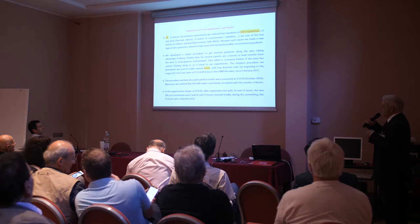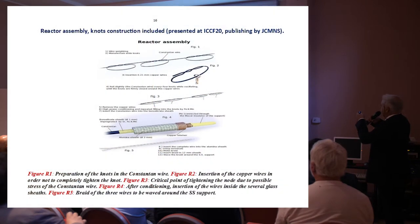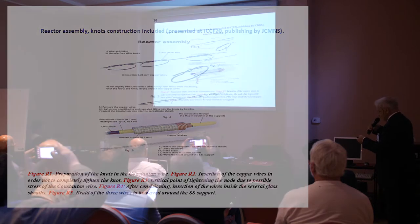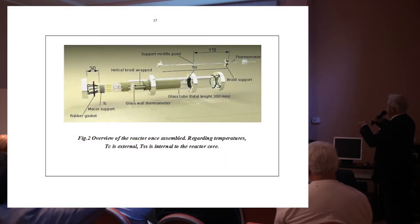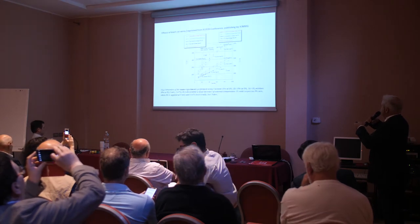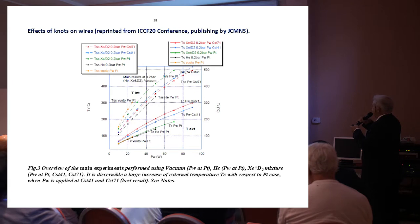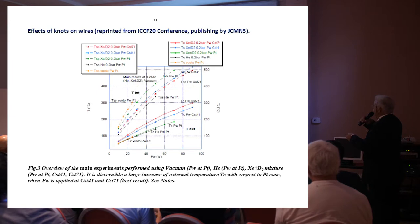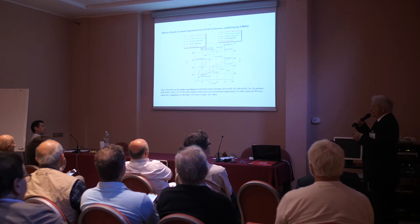We realized the excess power depends on the number of nodes. Increasing the node count — for example from 41 to 71 — in the same reactor increases the temperature with the same power input. Just increasing the nodes increases the temperature. This is very strange, and we understood that nodes have a positive effect.